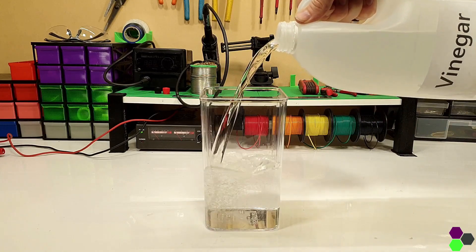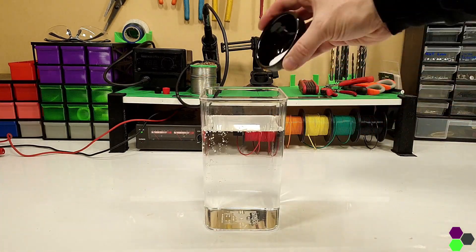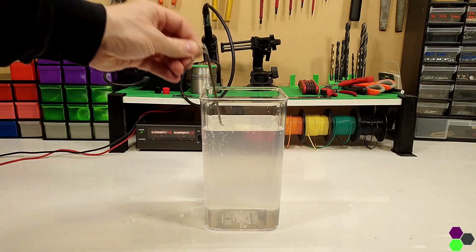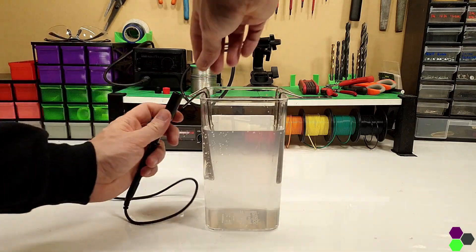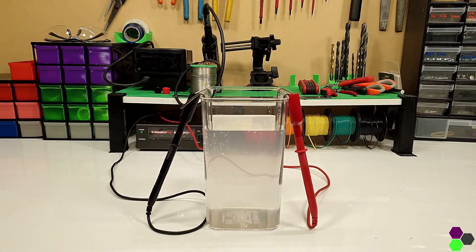Pour your vinegar into the non-metallic container. Add salt, up to 1 tablespoon of salt for every litre of vinegar. Insert your electrodes at opposite ends of the container and connect the positive terminal of your power supply to one and the negative to the other.